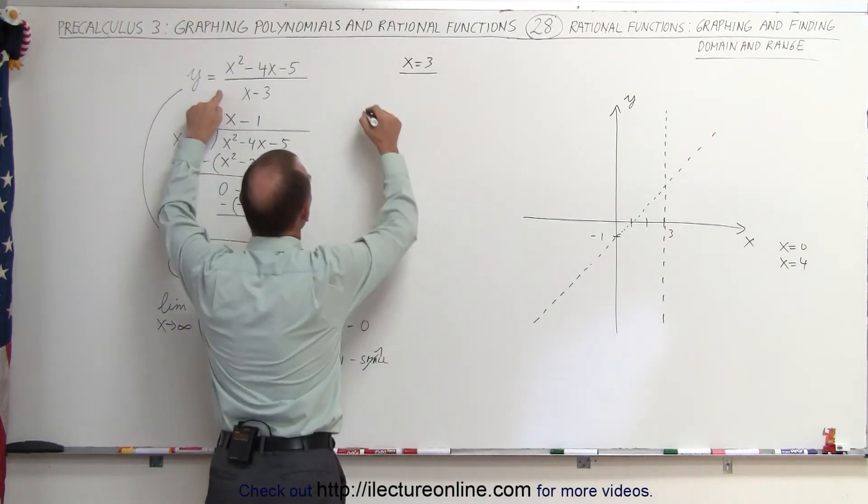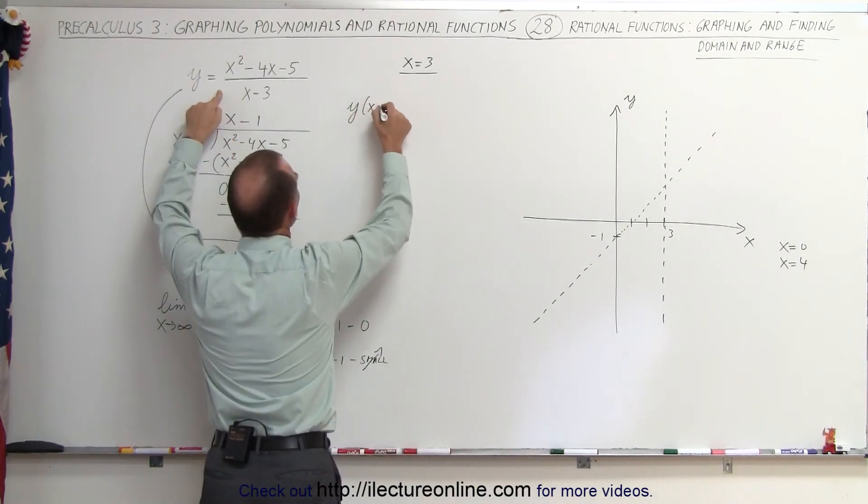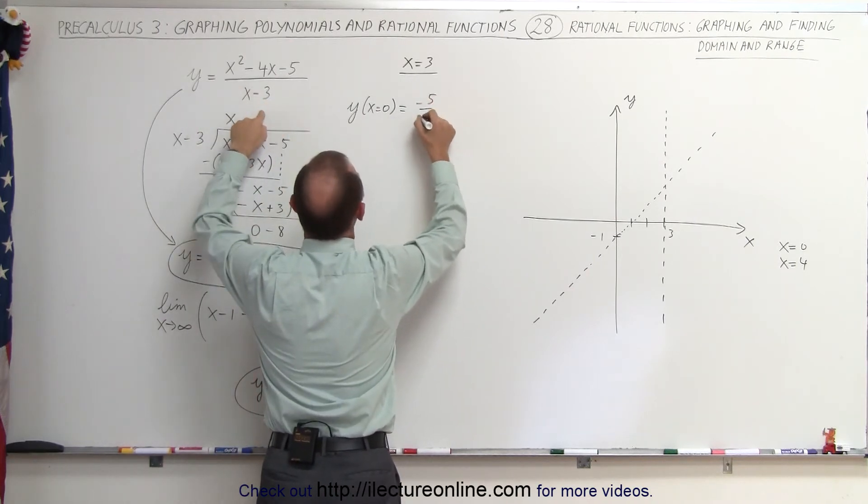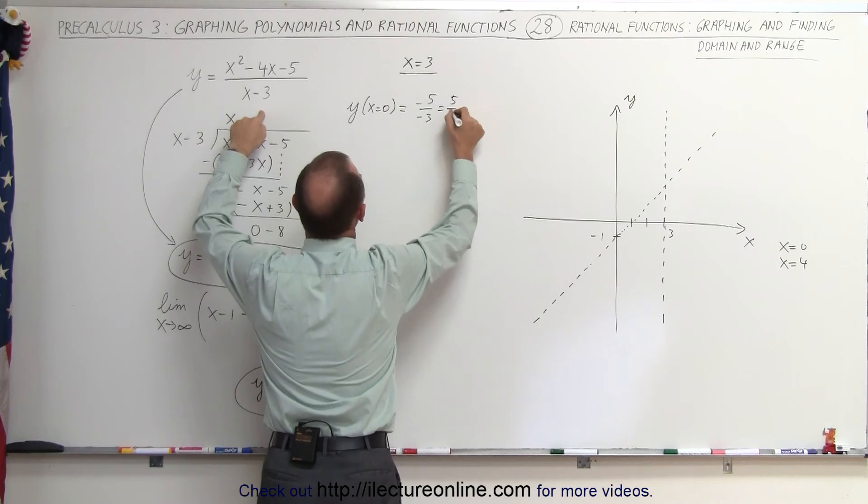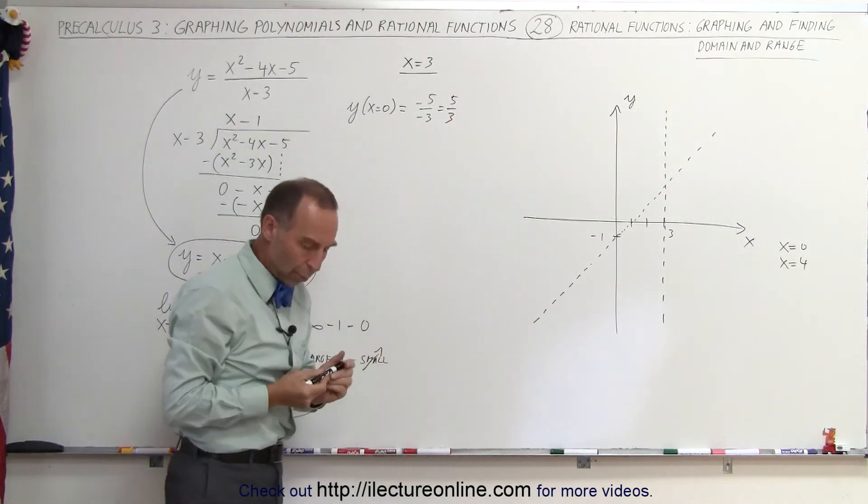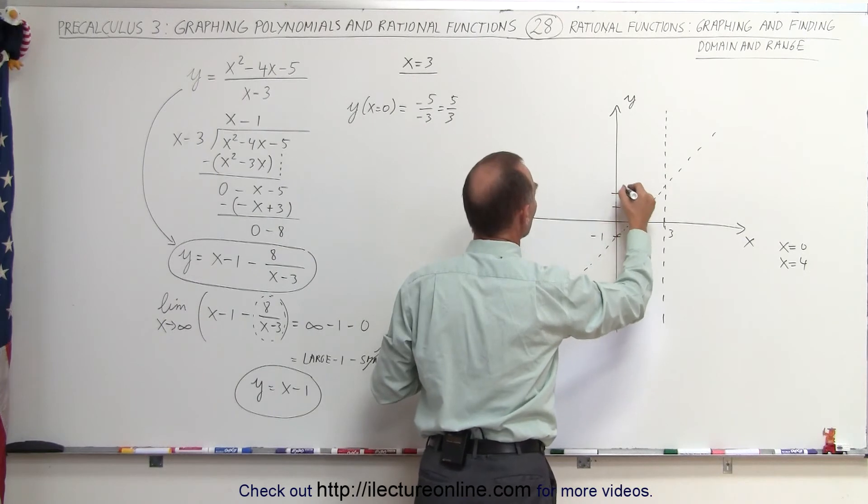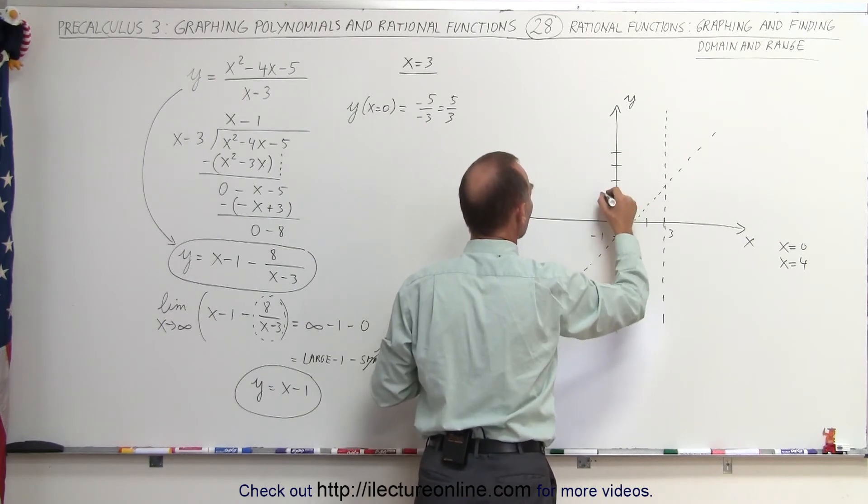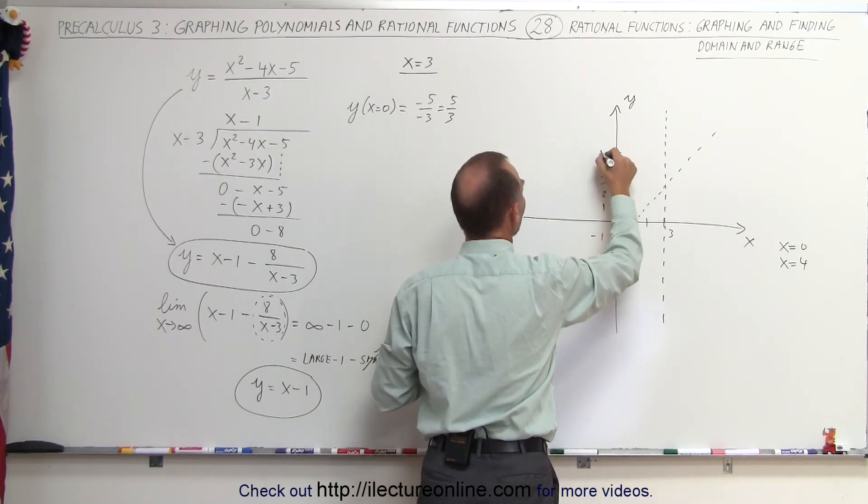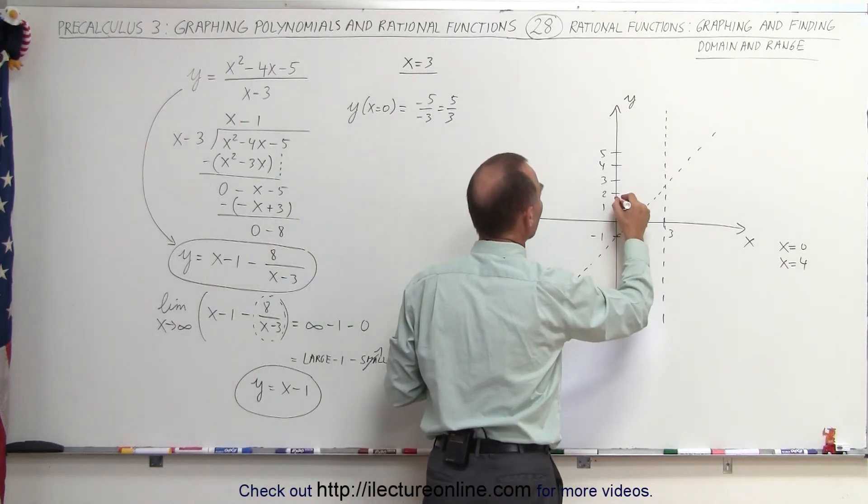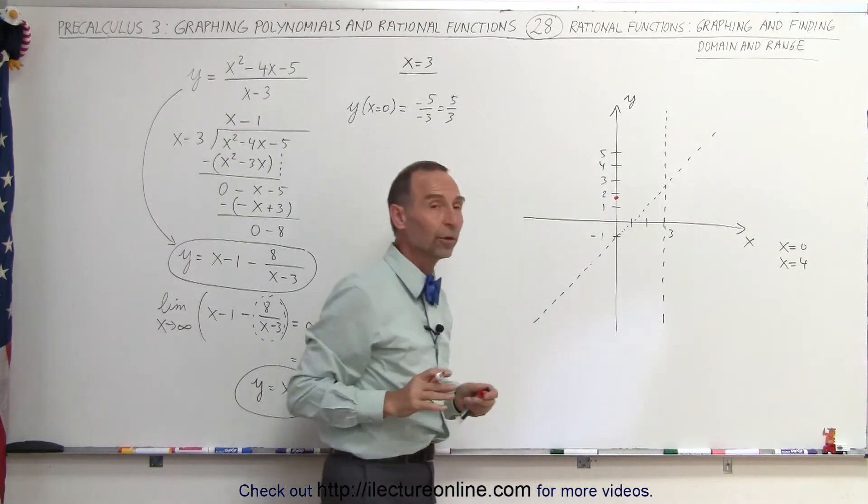When I plug that into my original equation, y when x equals 0 is equal to minus 5 divided by minus 3, which equals 5 thirds. So when x equals 0, y is 5 thirds. That would be 1, 2, 3, 4, 5. 5 thirds is between 1 and 2. So when x equals 0, y would be right about there. So that's one of the points.